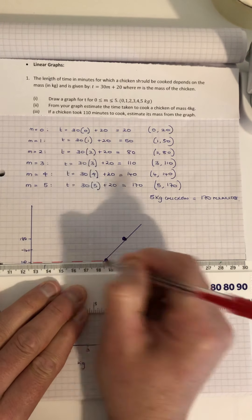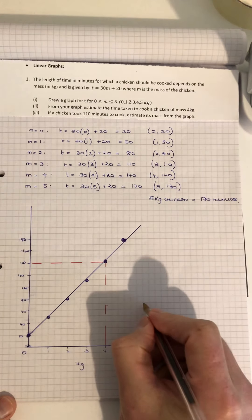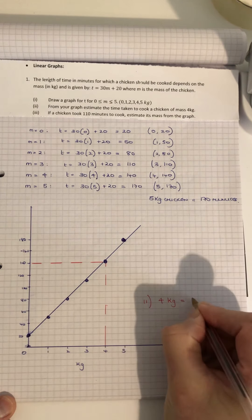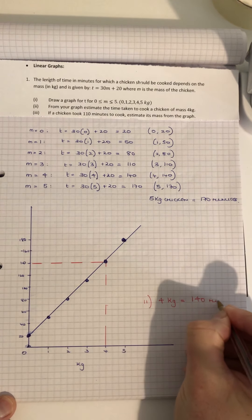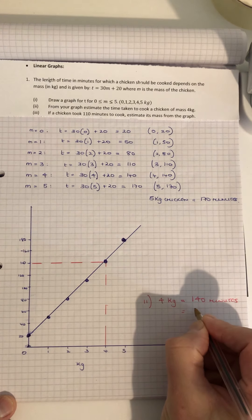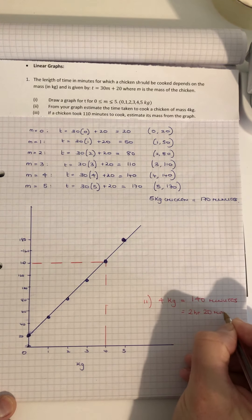We have to use our graph, even though we might know the answer. So 4 kg is equal to 140 minutes, or you can change that into hours - 60 minutes in an hour - so 2 hours and 20 minutes. That's your average chicken, I would say.